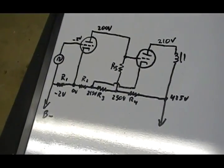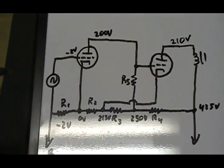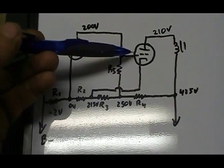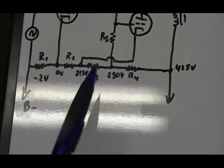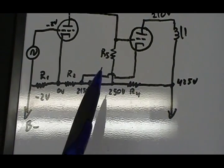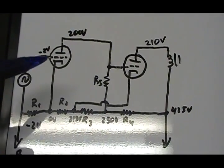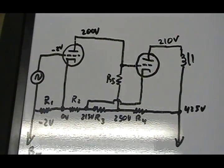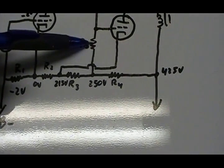The last coupling method is direct coupling. With all the other coupling types we wanted to keep B+ out of the grid, but with direct coupling we actually allow B+ to be present at the grid. This is done using an elaborate voltage divider. For example, R5 acts as both the load resistor for the first tube and kind of like RG for the second tube. With 250 volts at the plate, a 50-volt drop across R5 gives 200 volts at the grid point.